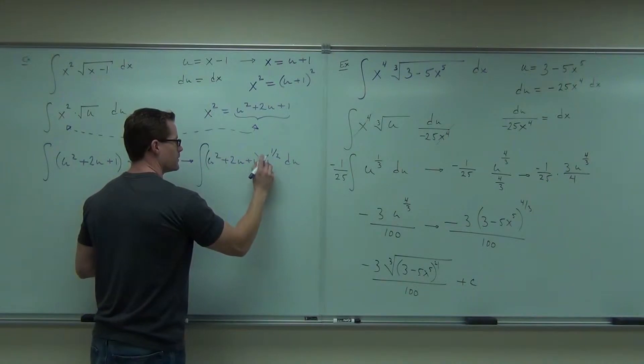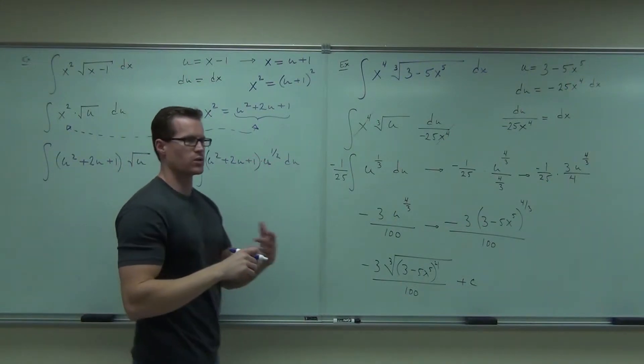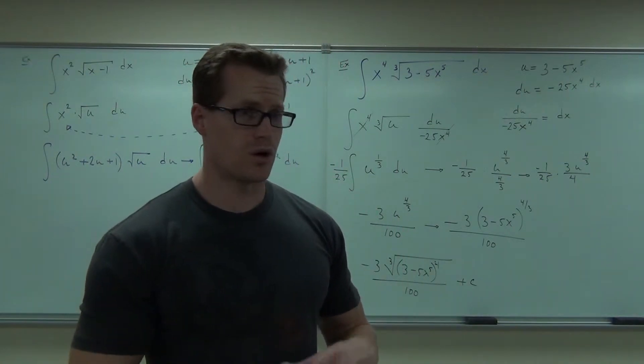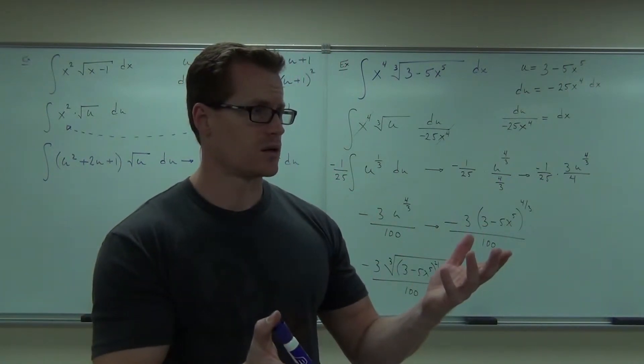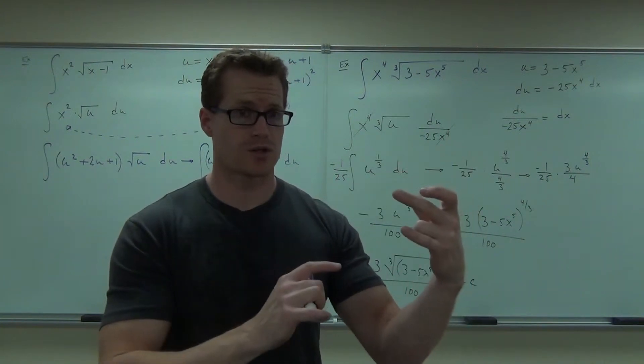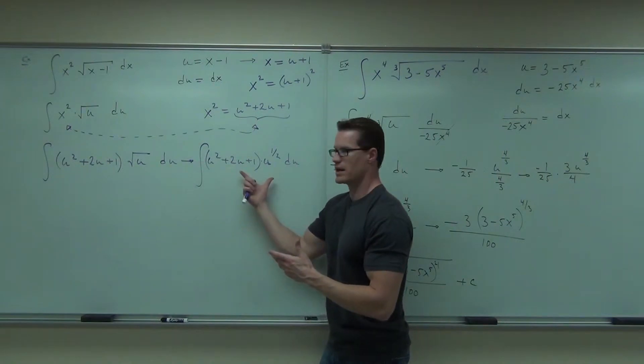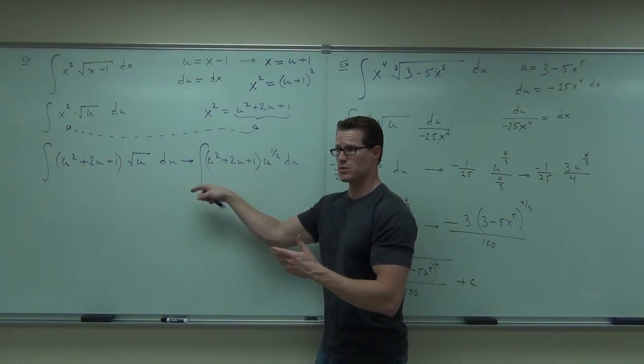Now, why did I do that? Why is this going to work for us? What can you do? If you distribute, everything's in terms of u's, right? Can't you use those exponents to your advantage? Now, notice what we can't do. We can't just take an integral right here. We can't take an integral right now. We would have to absolutely distribute that.